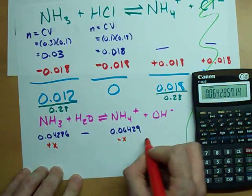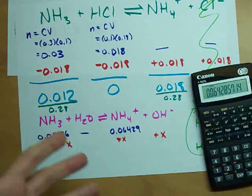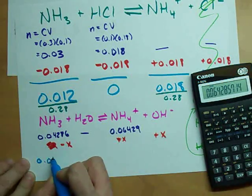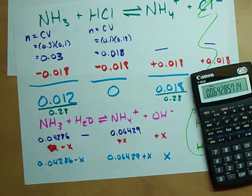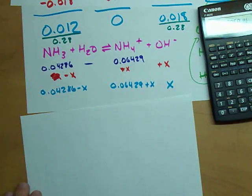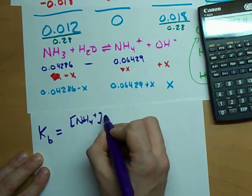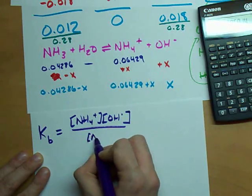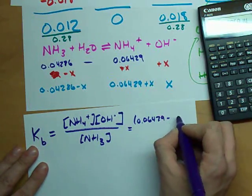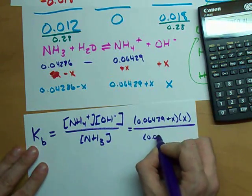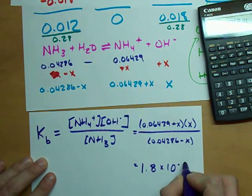Initial, change, equilibrium. I'm going to lose some of that, gain some of this, and gain some of that, so that my final or equilibrium concentrations are 0.04286 minus x, 0.06429 plus x, and x. You guys know what I'm doing when I talk about doing an ICE table, right? Because KB for this reaction is NH4+ times OH- all over NH3. In this case, that's (0.06429 + x) times x all over (0.04286 - x), and KB we were given before is 1.8 × 10^-5.